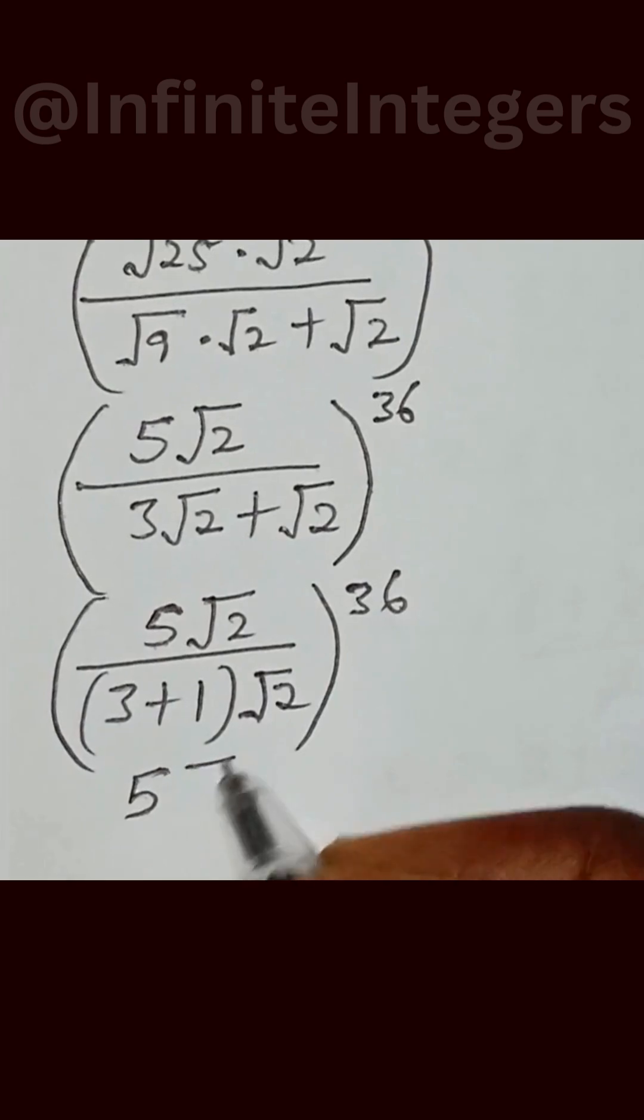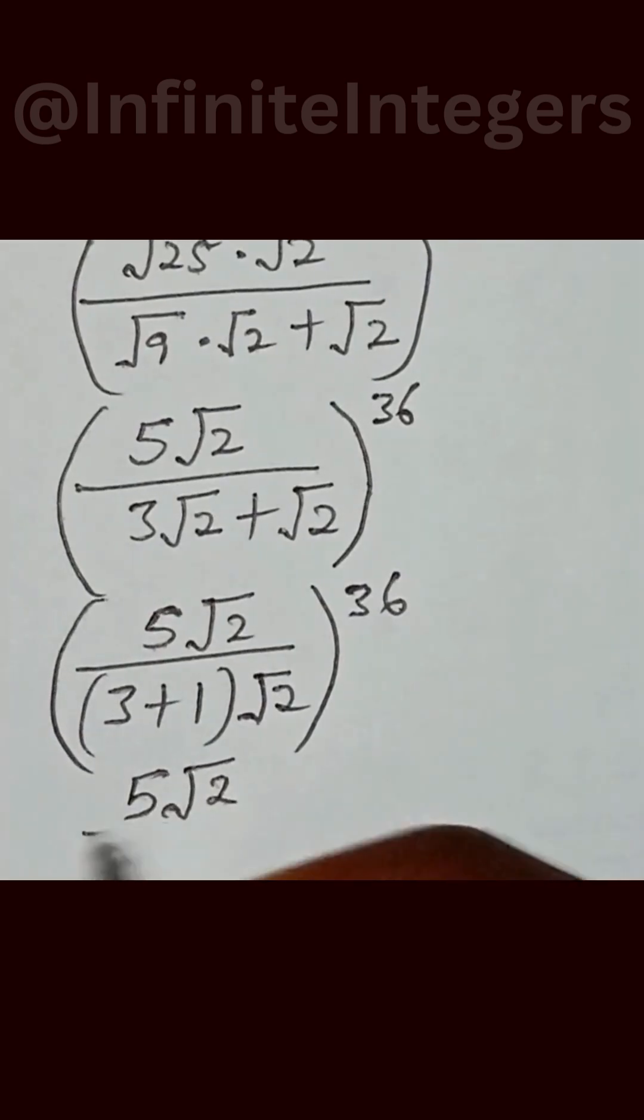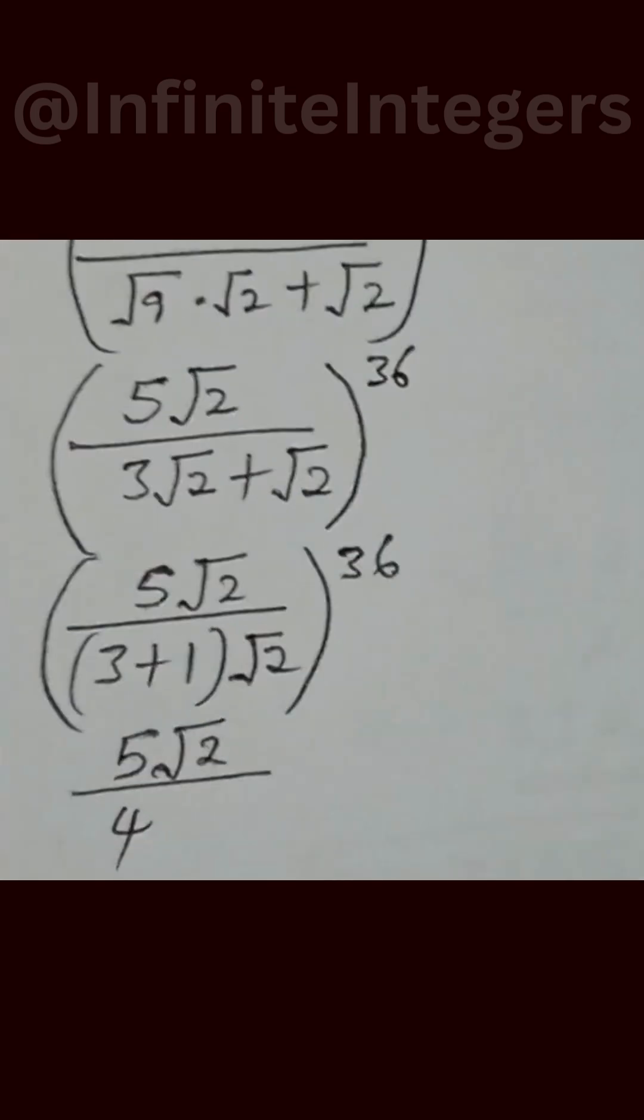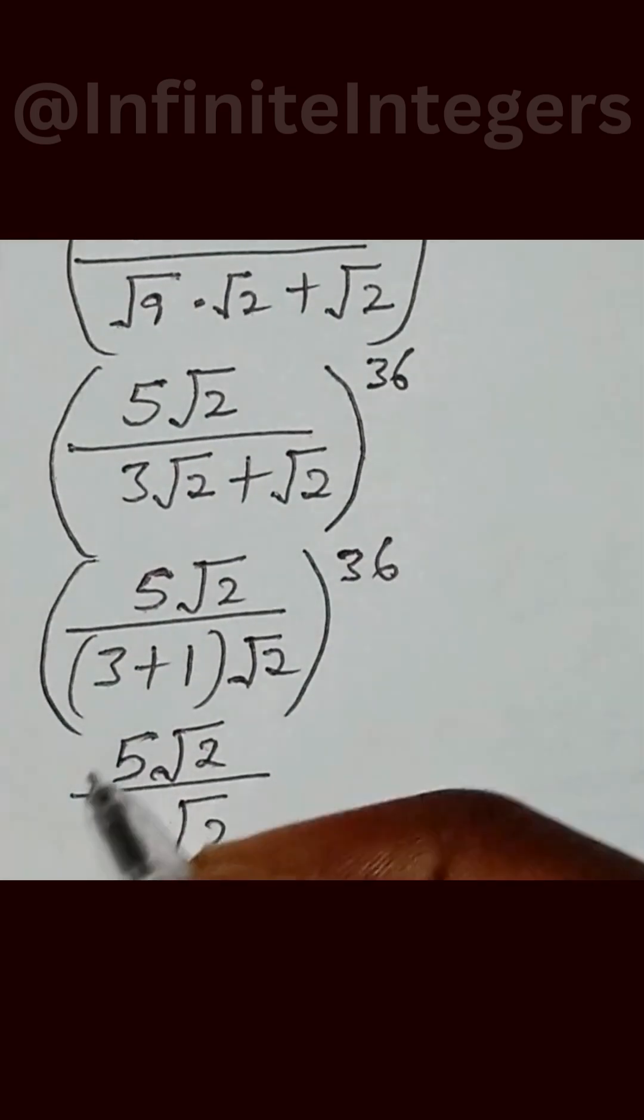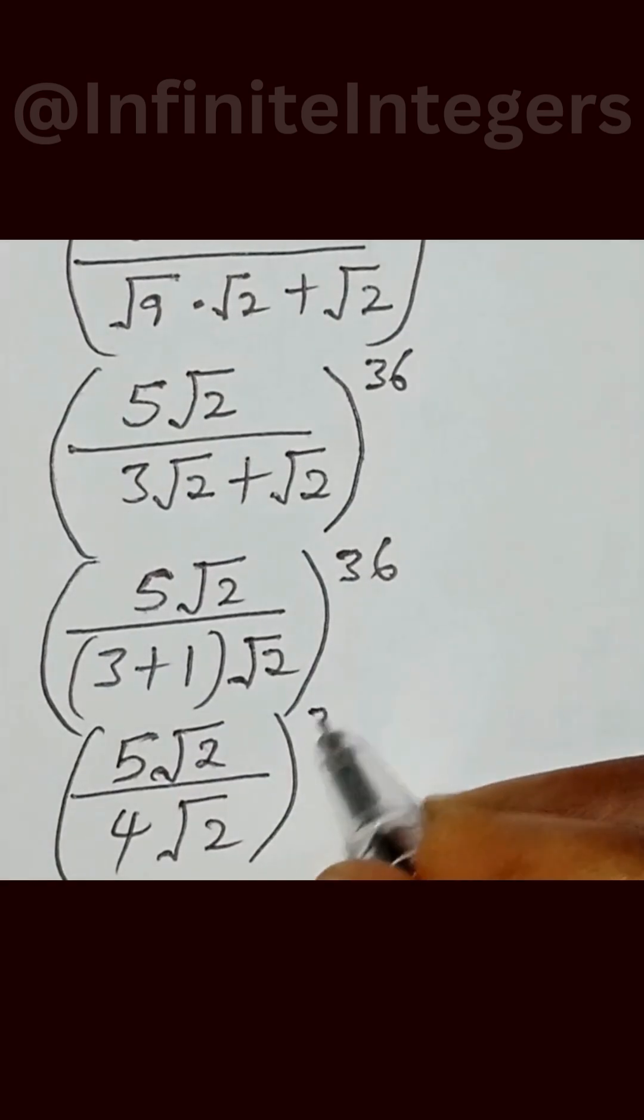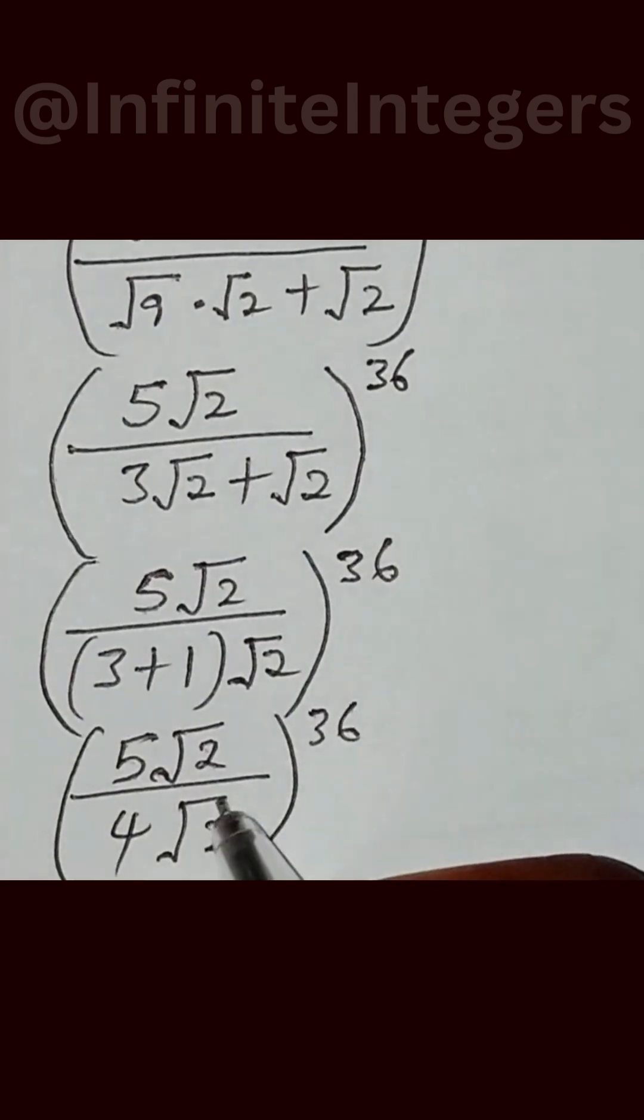We have 5 square root of 2 over 4 square root of 2 into bracket to the power of 36. Square root of 2 cancels.